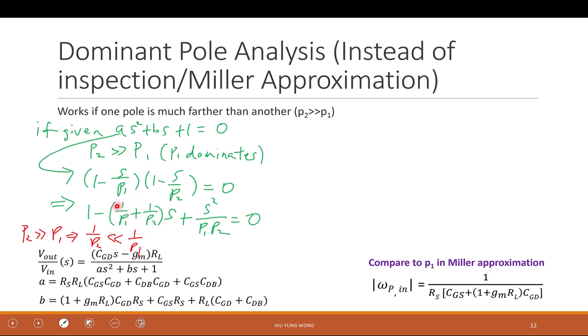then 1 over 1 gigahertz is 100 times smaller than 1 over 100 megahertz. So this was, let's say, supposed to be 0.1001. I can ignore the 0.0001.